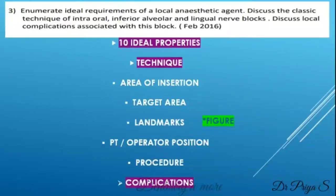Coming on to the complications: here you have been asked to write the complications associated with inferior alveolar nerve block — not the local or systemic complications associated with local anesthesia in general. So be specific. There are three different complications associated with IANB described in the textbook. List out all of them and write one or two lines about each complication.